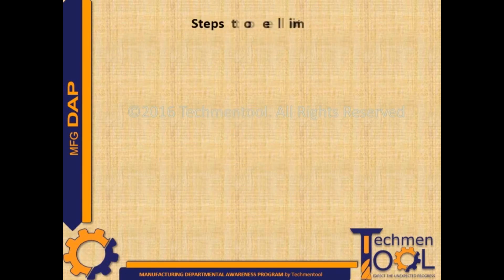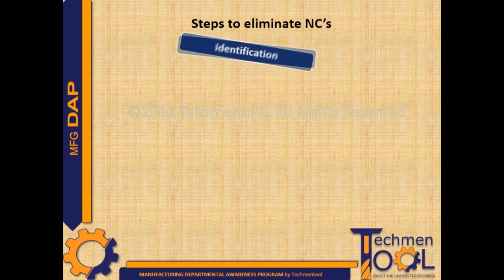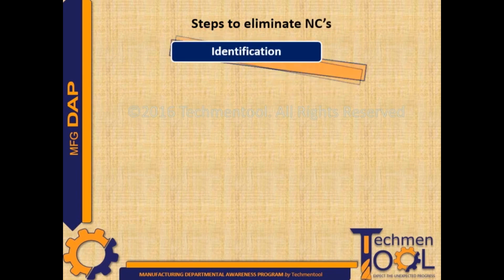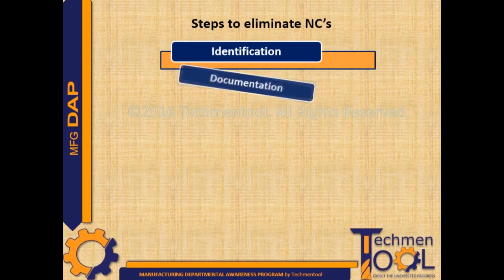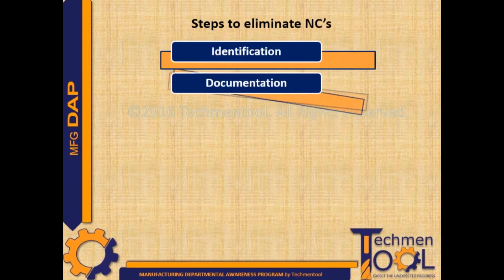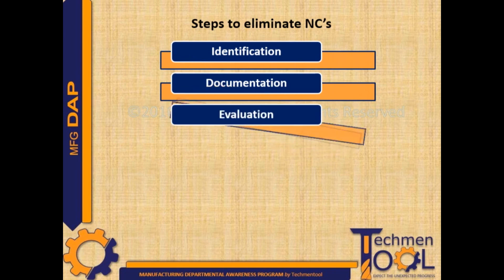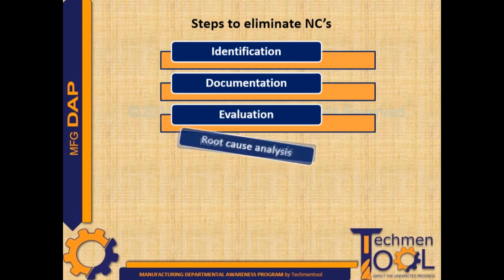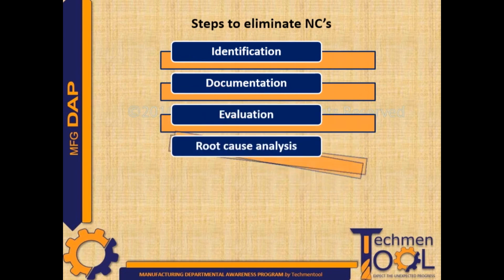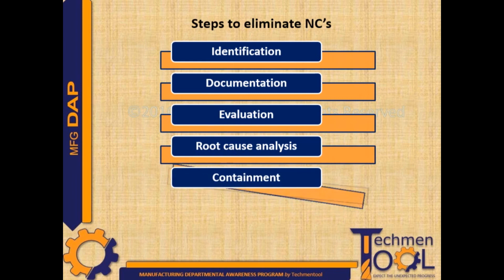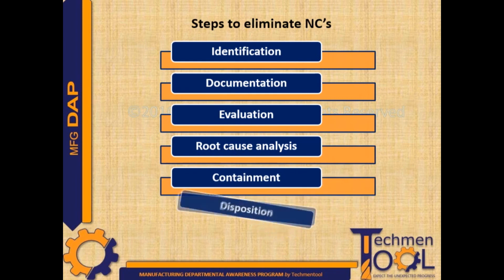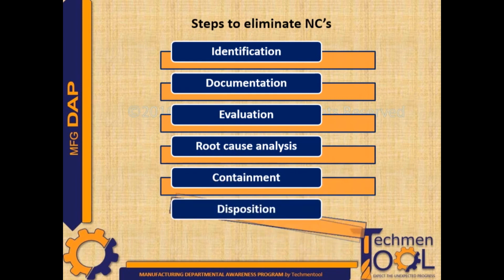The following steps will be followed to eliminate NCs: identification of nonconformance, documentation of its category either minor or major, evaluation of its consequences, root cause analysis, containment action for its consequences, and disposition of NCs.